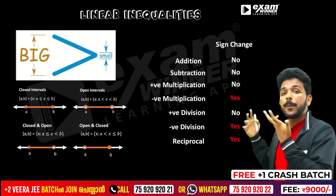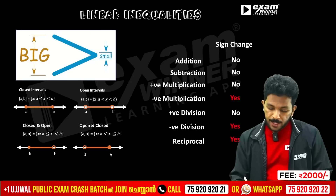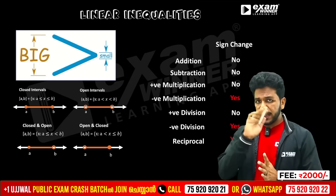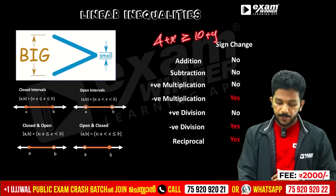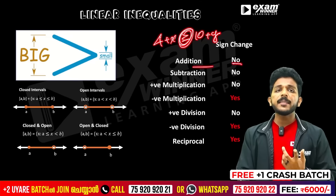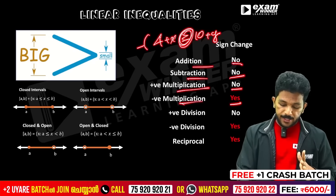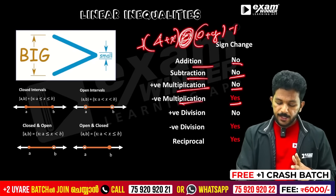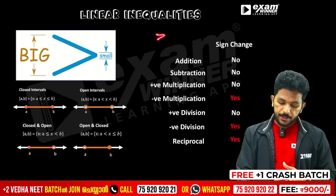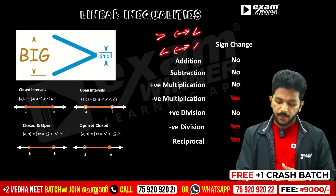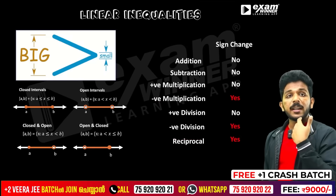If we do any operation with an inequality symbol: if you add or subtract, the sign does not change. Addition or subtraction does not cause a sign change — for example, 4 plus x greater than or equal to 10 plus y stays the same. How do you change the symbol? If you multiply or divide by a negative number, the inequality sign flips — greater than becomes less than.